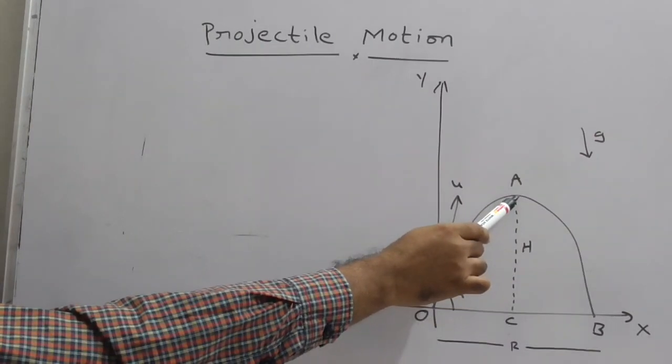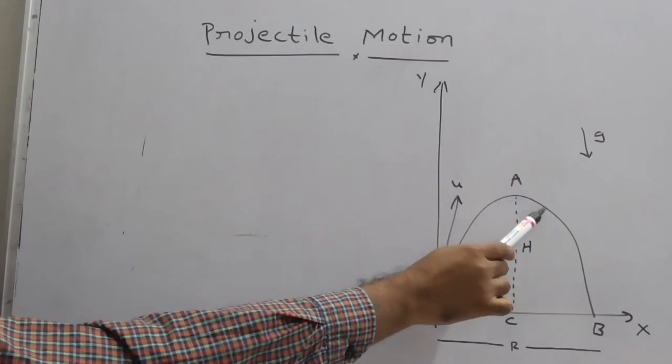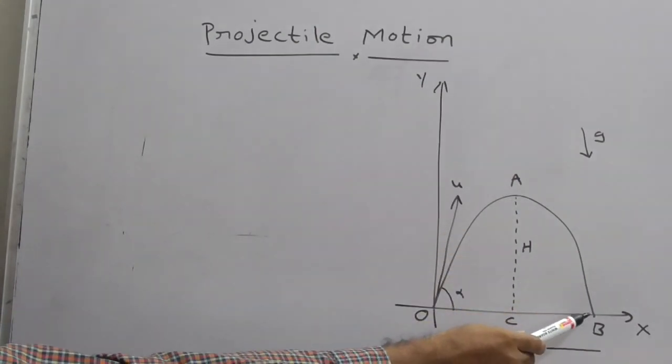At an angle alpha with horizontal line with an initial velocity u, it goes through the highest point A. It goes to the highest point A,